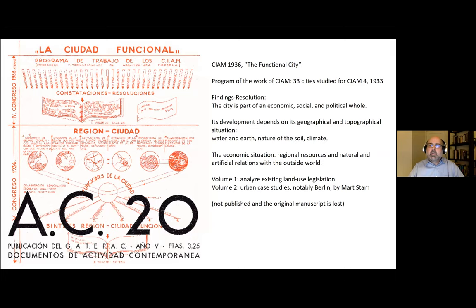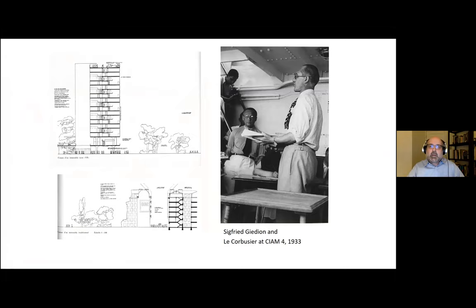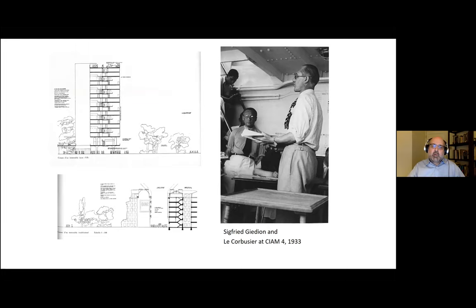Out of all of this, only a few projects were actually built — Sert's anti-tuberculosis clinic and the Casa Bloc apartments, which still exist fortunately today, now preserved and restored. It's a gallery access project where the units are double height, with the idea that these galleries can be places of social interaction and social mingling, the climate of Barcelona allowing for more outdoor living. Very carefully organized, technically advanced building methods, with a lot of emphasis placed on modularity — which would continue to be a focus of Sert's housing work, with a lot of flexibility in the plans of different types of units.